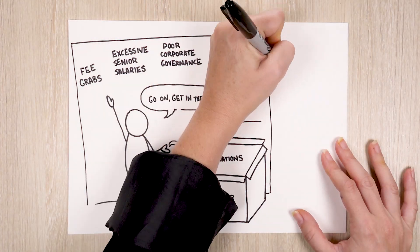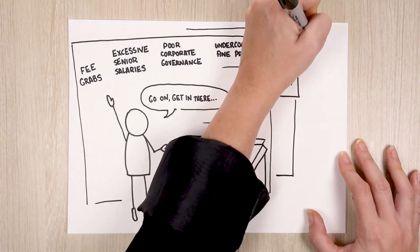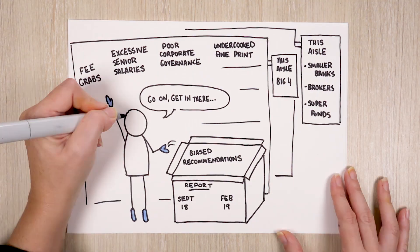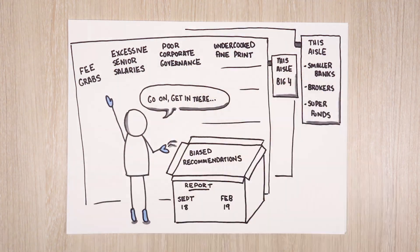While the RC will hone in on the big four banks, they will also be checking out smaller banks, mortgage brokers, wealth managers, insurance providers and superannuation funds.